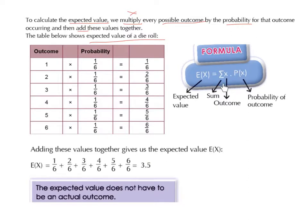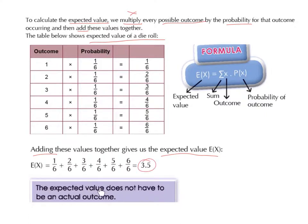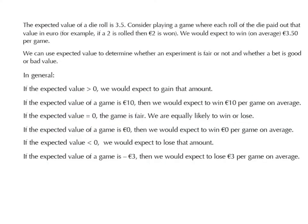So the expected value is the sum of each outcome multiplied by the probability of that outcome. Adding these values together — one sixth plus two sixths plus three sixths plus four sixths plus five sixths plus six sixths — gives us 3.5. The expected value does not have to be an actual outcome. The expected value of a die roll is 3.5.